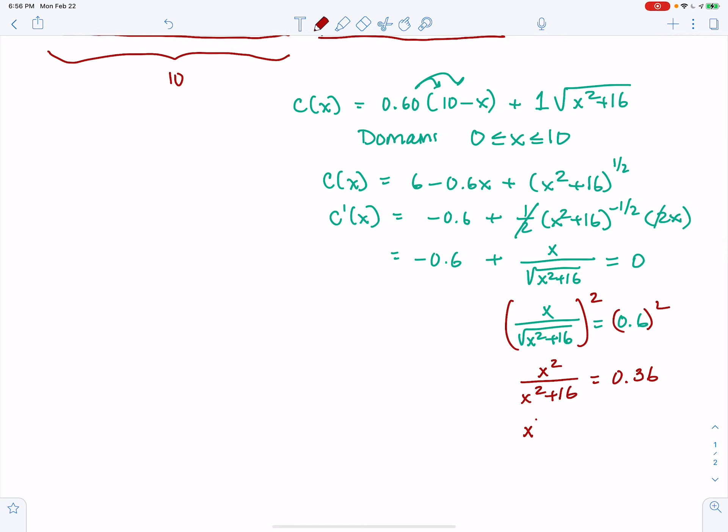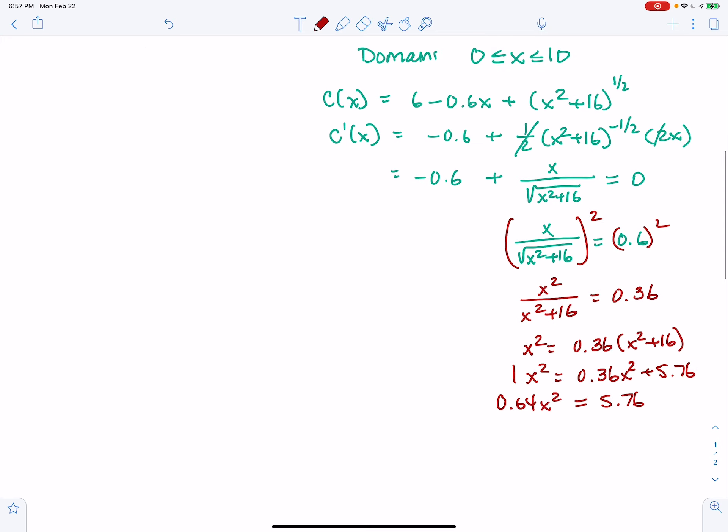I'm going to multiply both sides by X squared plus 16. And then multiply it out. So we have X squared equals 0.36 X squared plus 5.76. So try 0.36 X squared from both sides. We'll divide both sides by 0.64. And this just happens to go in evenly. So look at that. X squared is equal to 9.